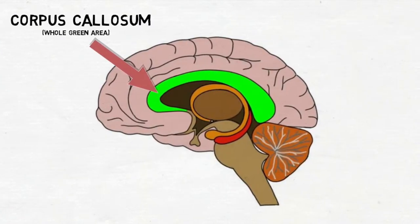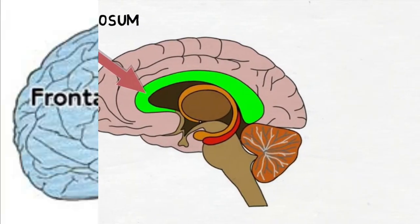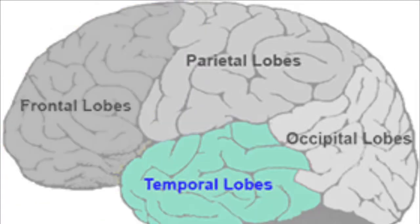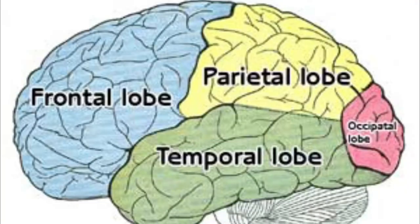You peel away that meninges layer, wipe off that cerebrospinal fluid, and you're looking right at the four lobes of the brain. Frontal, temporal, parietal, occipital! And each one's got a very special job.